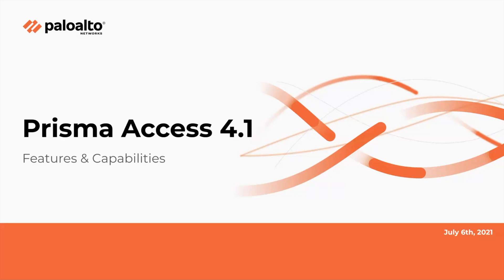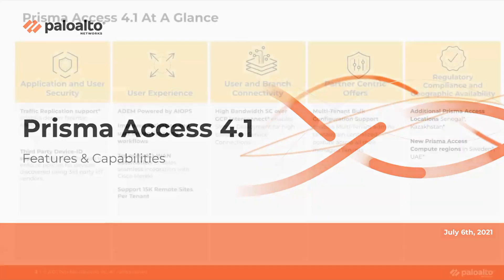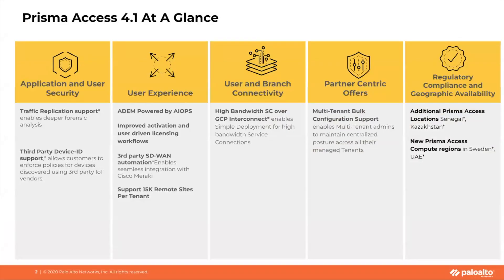We will be talking about these features in five different buckets: application and user security, user experience, user and branch connectivity, partner-centric offers, and regulatory compliance and geographical availability.